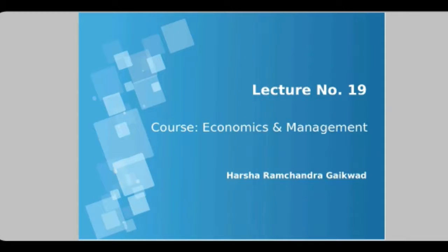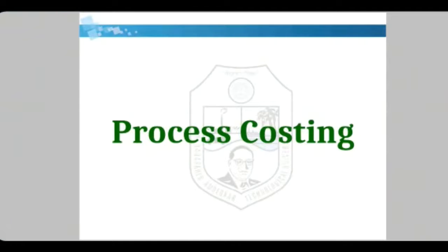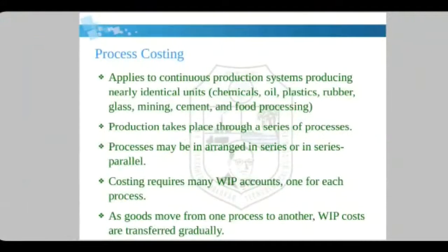Welcome to the 19th lecture of Economics and Management. In the last lecture we talked about job costing. Today we will talk about process costing. The difference is that job costing is applied to a particular job or product being produced, but process costing is applied to a product made through a continuous process — for example, process one, process two, process three. Process costing applies to continuous production systems producing nearly identical units, such as chemicals, oils, plastic, rubber.